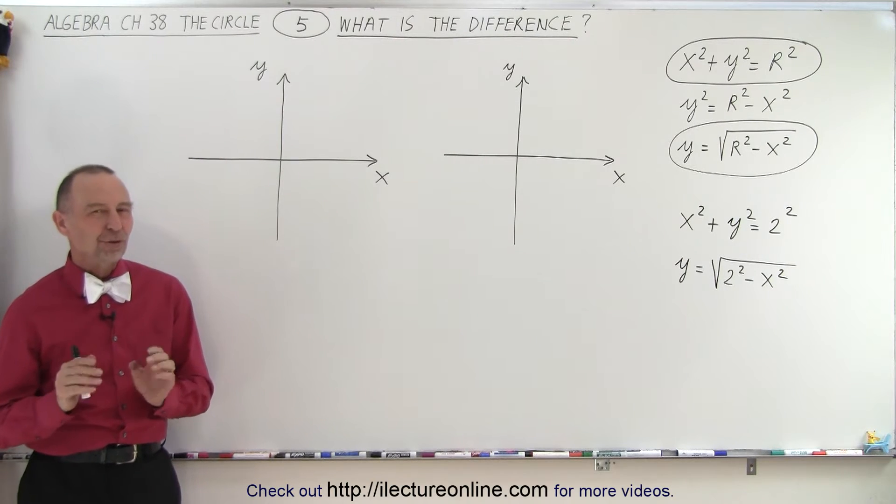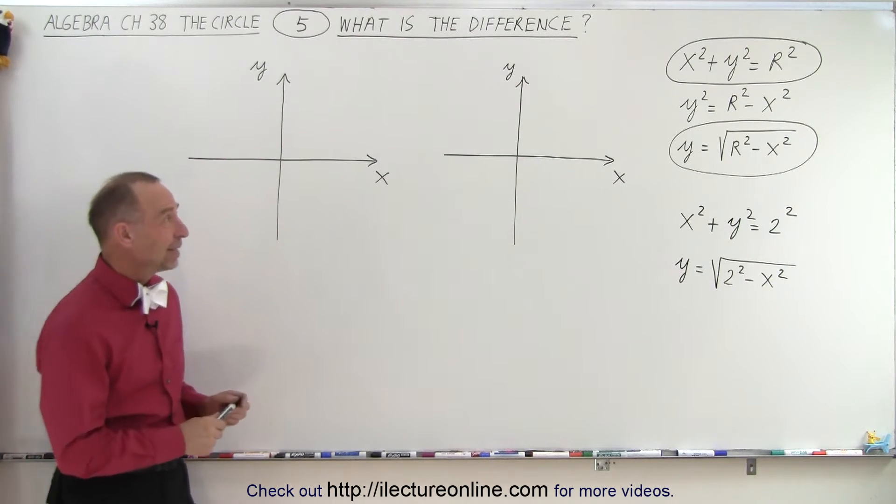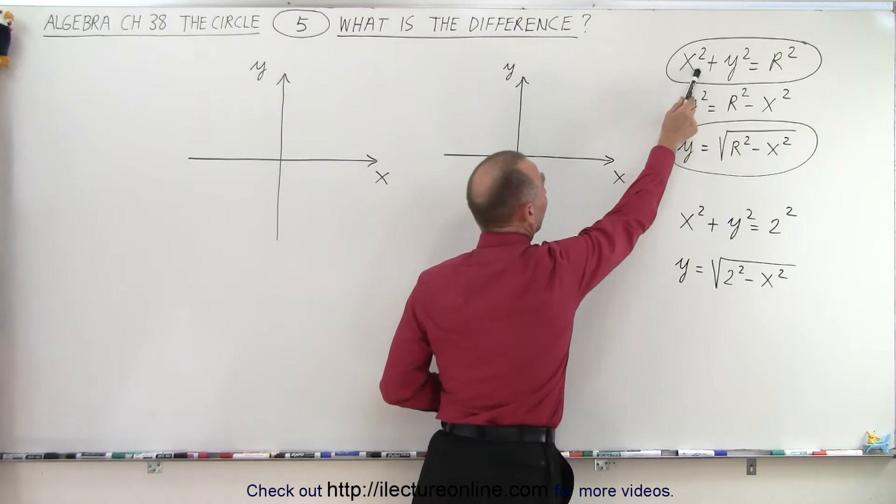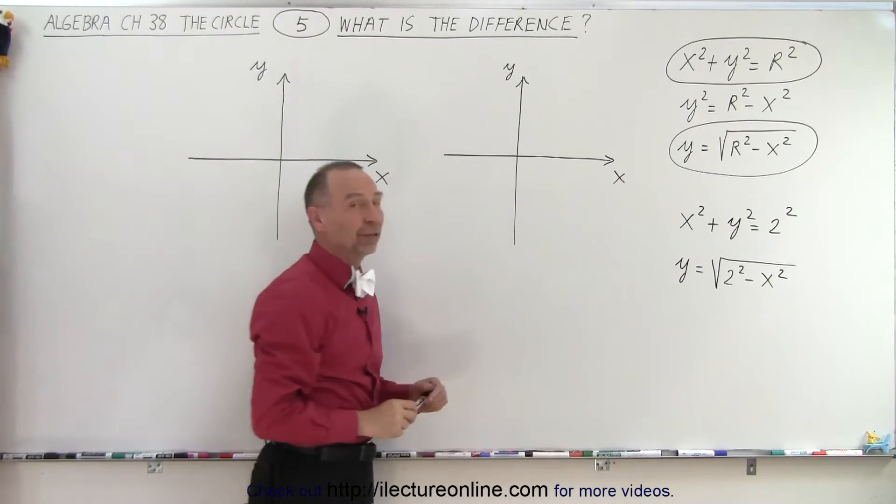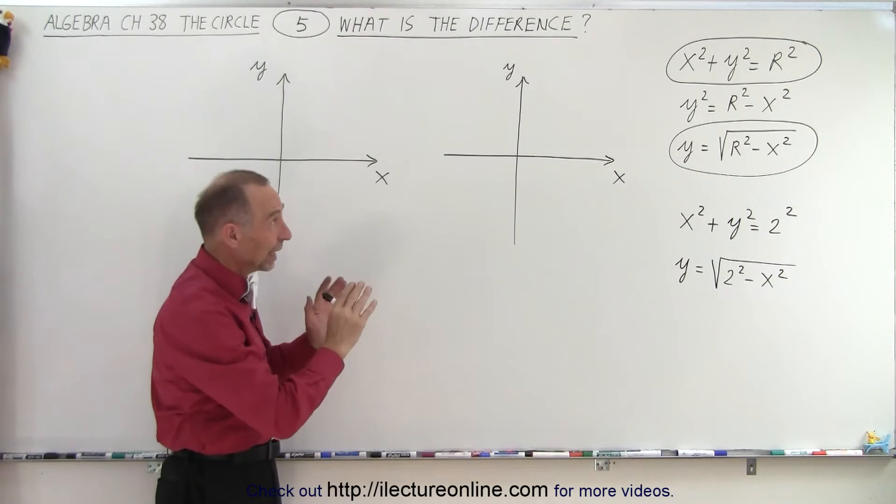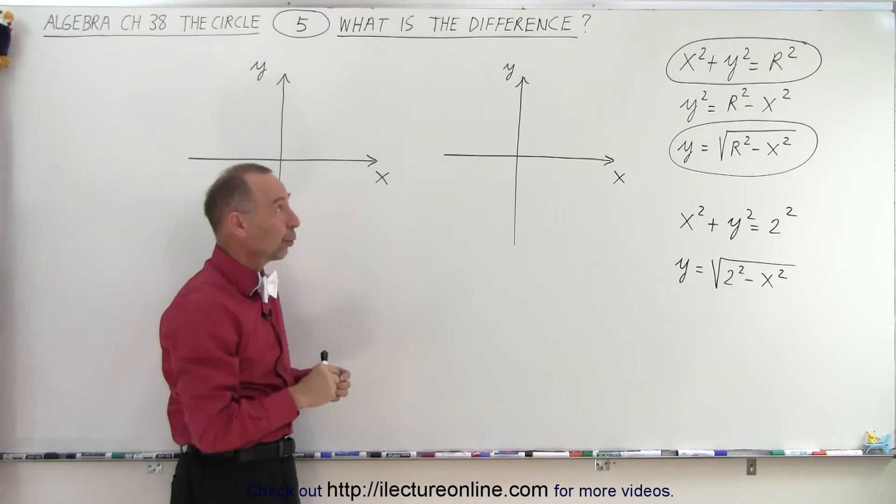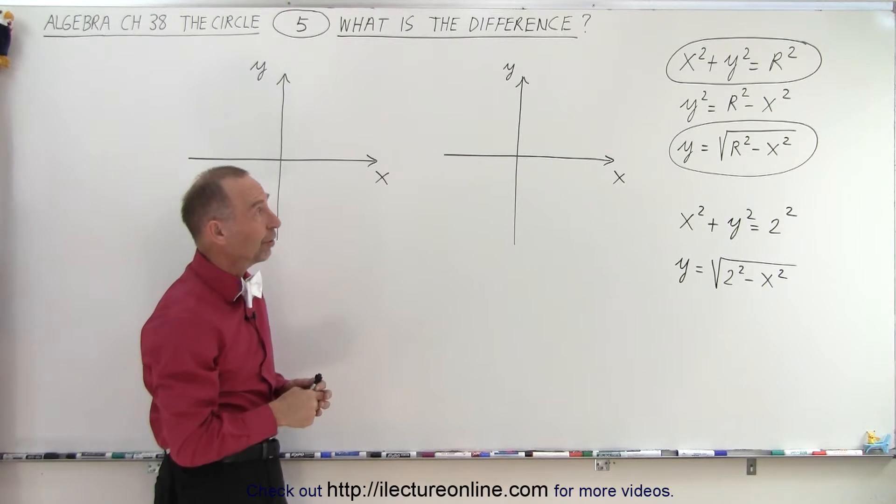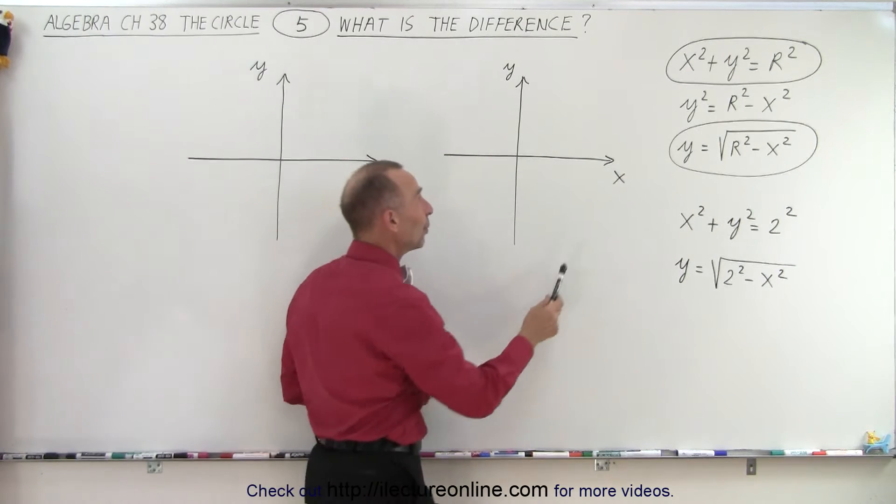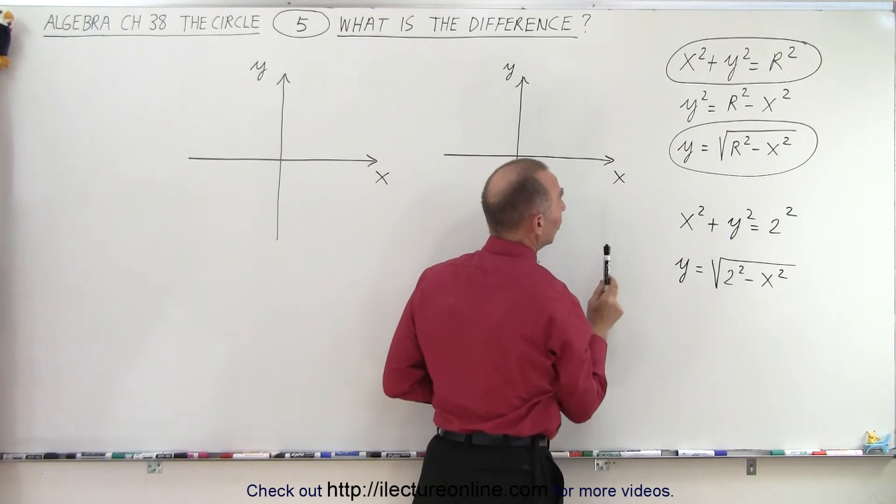I made a reference to there being a difference between writing the equation like this and writing the equation with a square root. To give you a simple example of that, we'll take an example where the center of the circle is at the origin, where h and k are equal to 0. So taking the first equation,